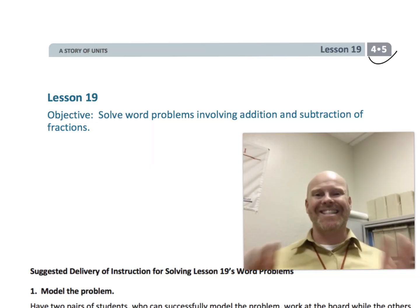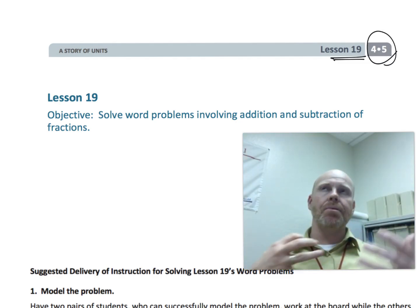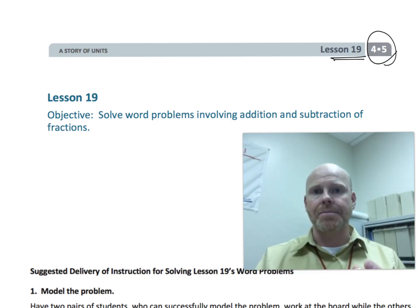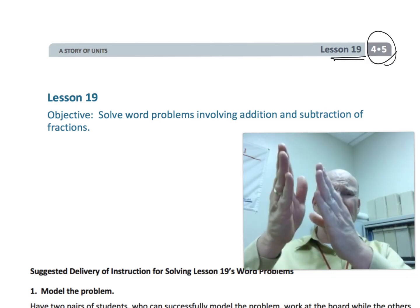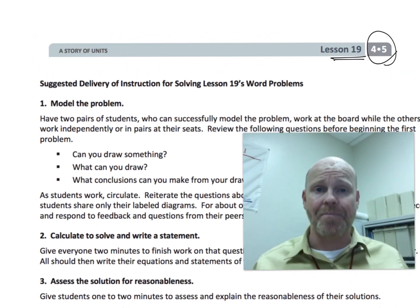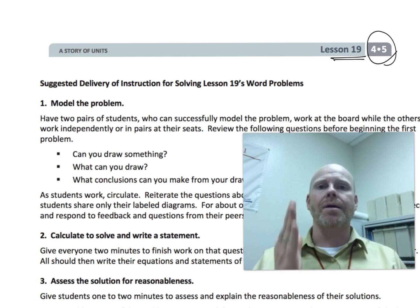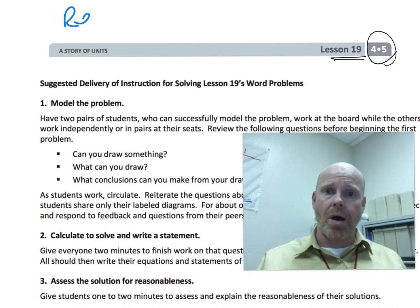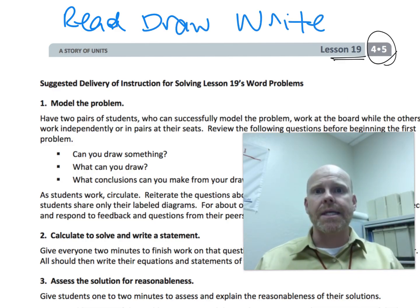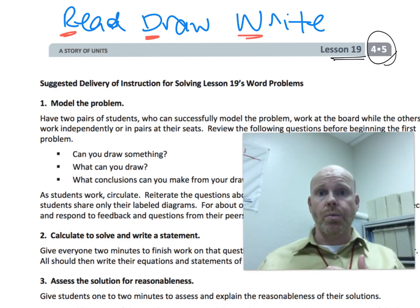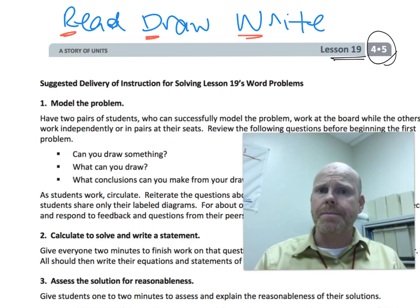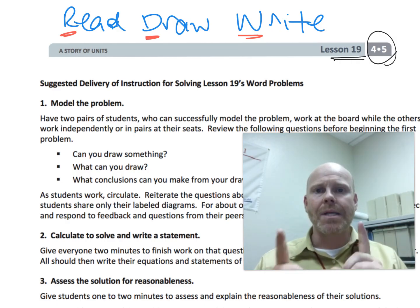This is fourth grade module 5 lesson 19. In this lesson, students are going to be putting together all that they've been learning about adding and subtracting fractions and putting it into action in word problems. We're going to employ the RDW process — the Read, Draw, Write process. There are six problems here. I'm going to model the drawing for all six, because a lot of parents and teachers from the old school way of learning don't know how to draw it. I'm going to solve maybe just three of the six. Let's get going.